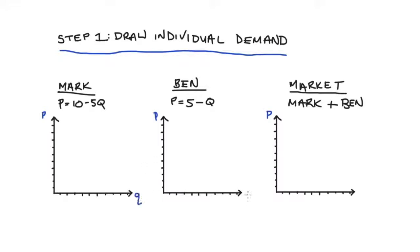Since our demand equations are expressed with p isolated on the left hand side, we can take the constant terms here as our vertical axis intercepts. So for Mark that's 10. If this is confusing and you are unsure about how to draw demand curves from algebraic equations, I'll put a link to a separate video that shows this skill in more depth. And Ben's vertical axis intercept is 5.